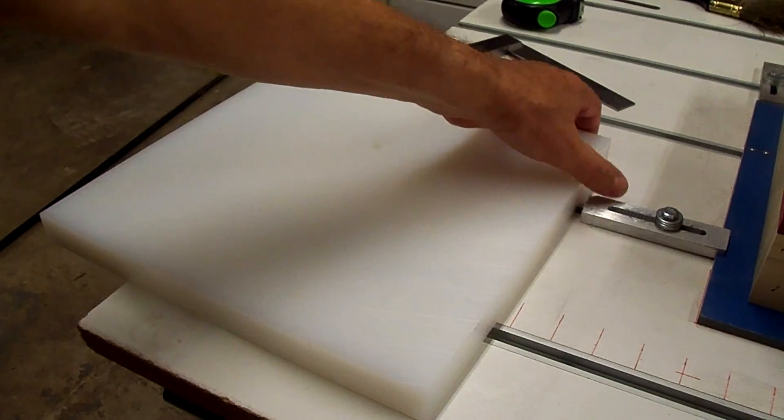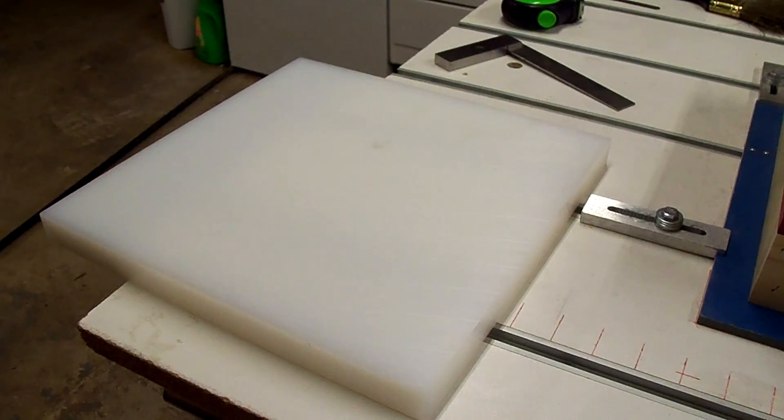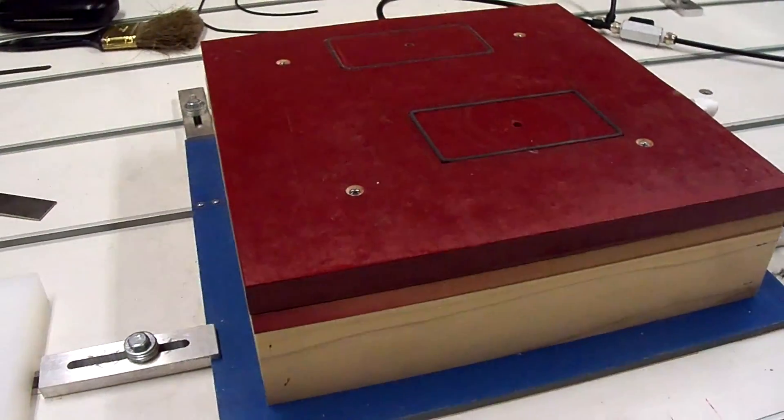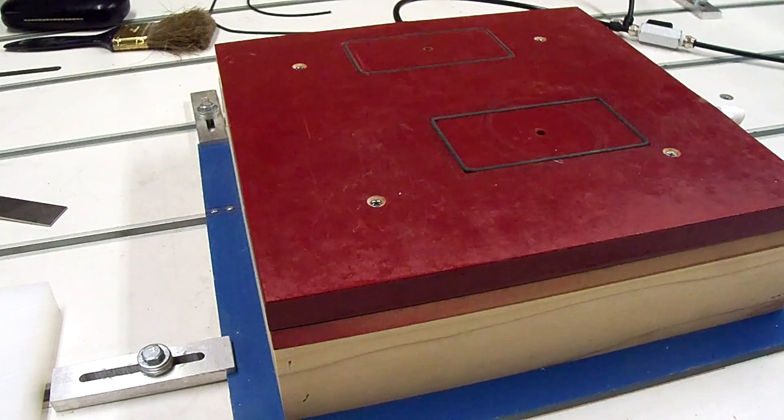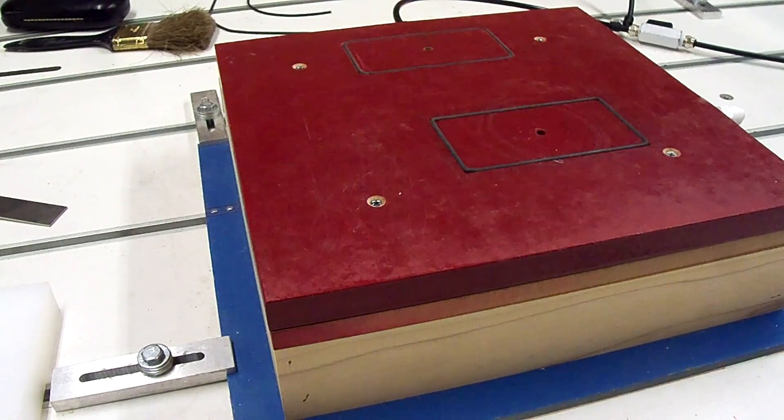With a rough pass and a finish pass, so I'm going to mount it on the MDF fixture now and get the bit lined up to get it good and square on one side here and then we'll start cutting.